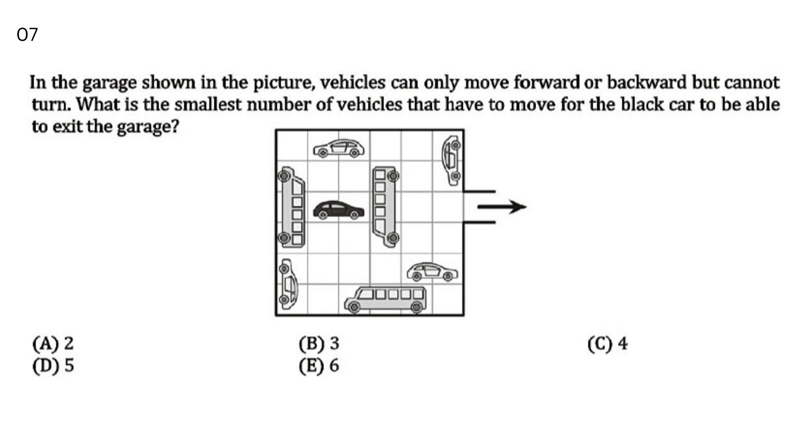In the garage shown in the picture vehicles can only move forward or backwards but cannot turn. What is the smallest number of vehicles that have to move for the black car to be able to exit the garage? In the garage shown in the picture, vehicles can only move forward or backwards. How many vehicles minimum need to move for the black car to exit? Your answer is C, 4.